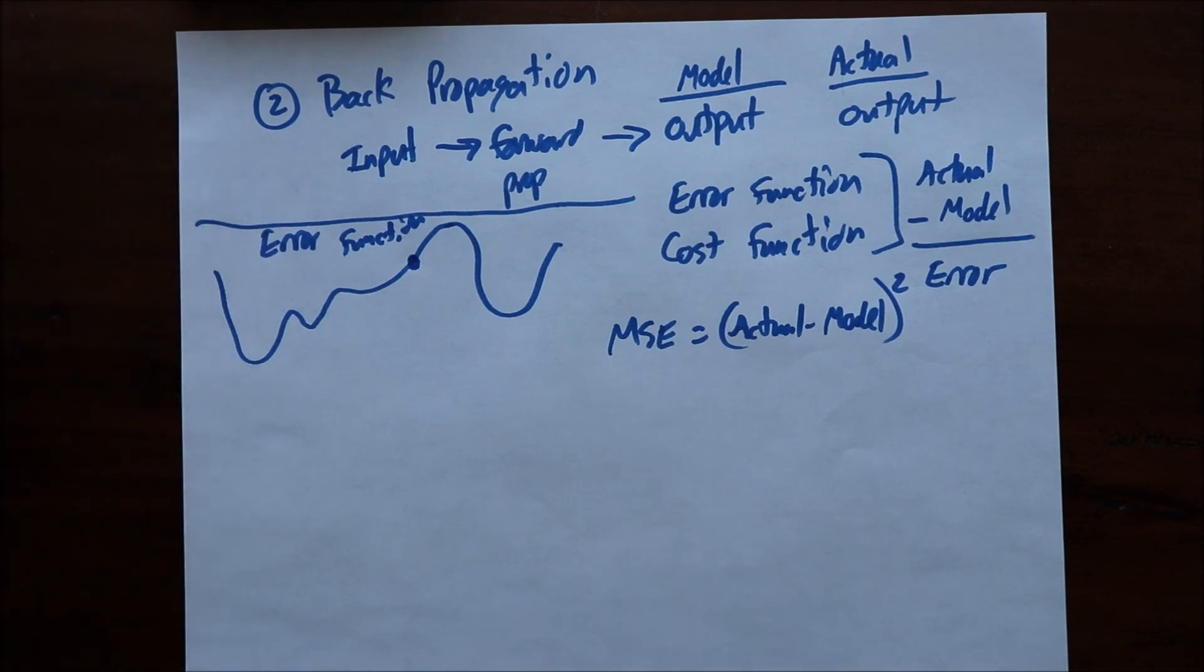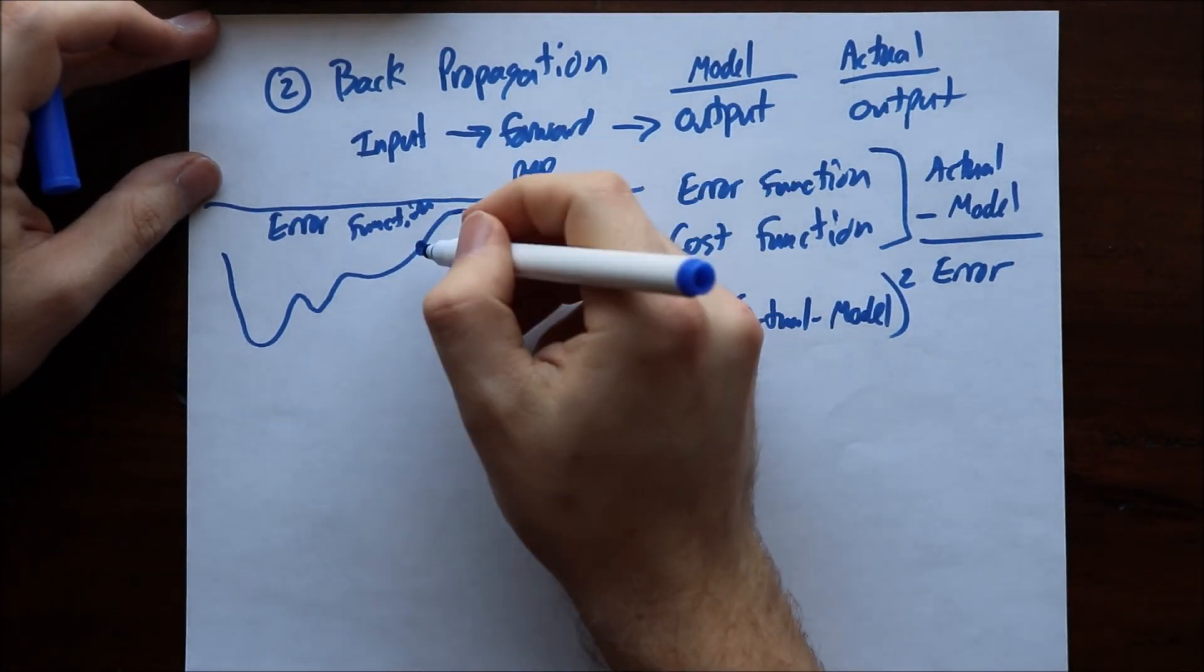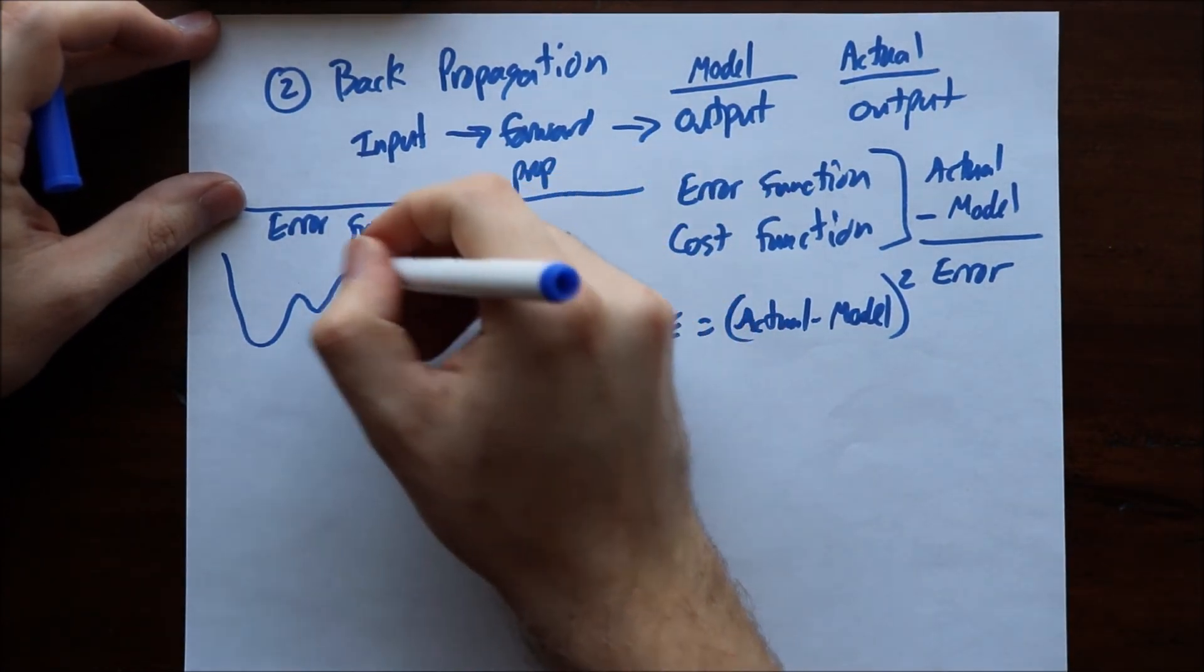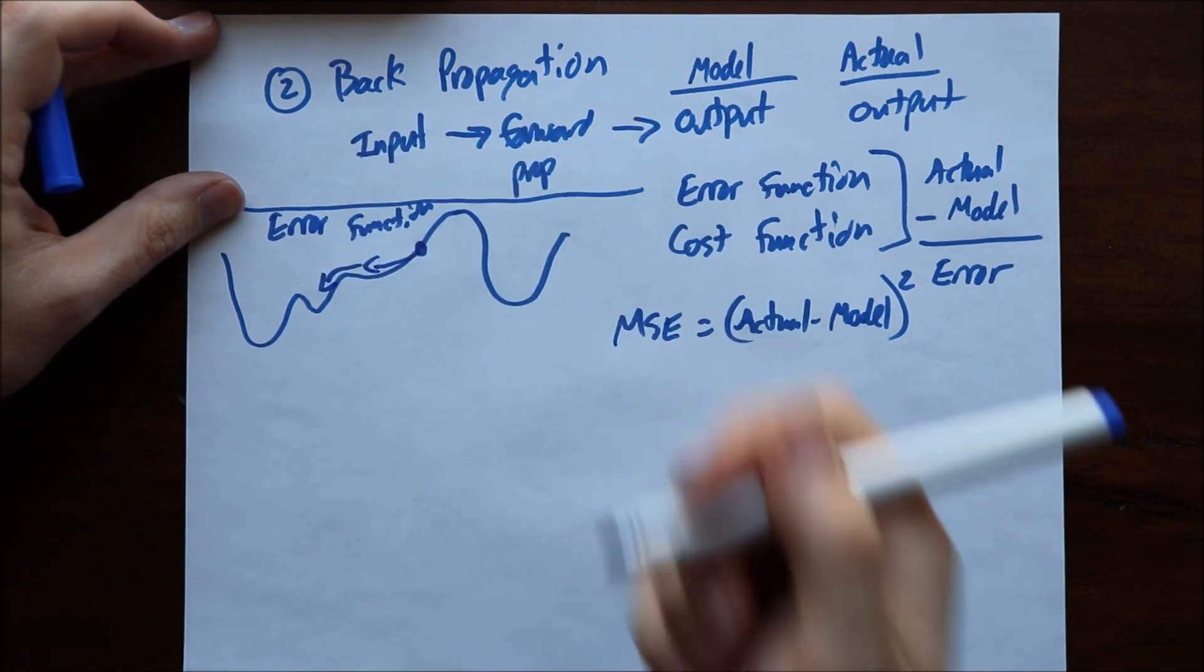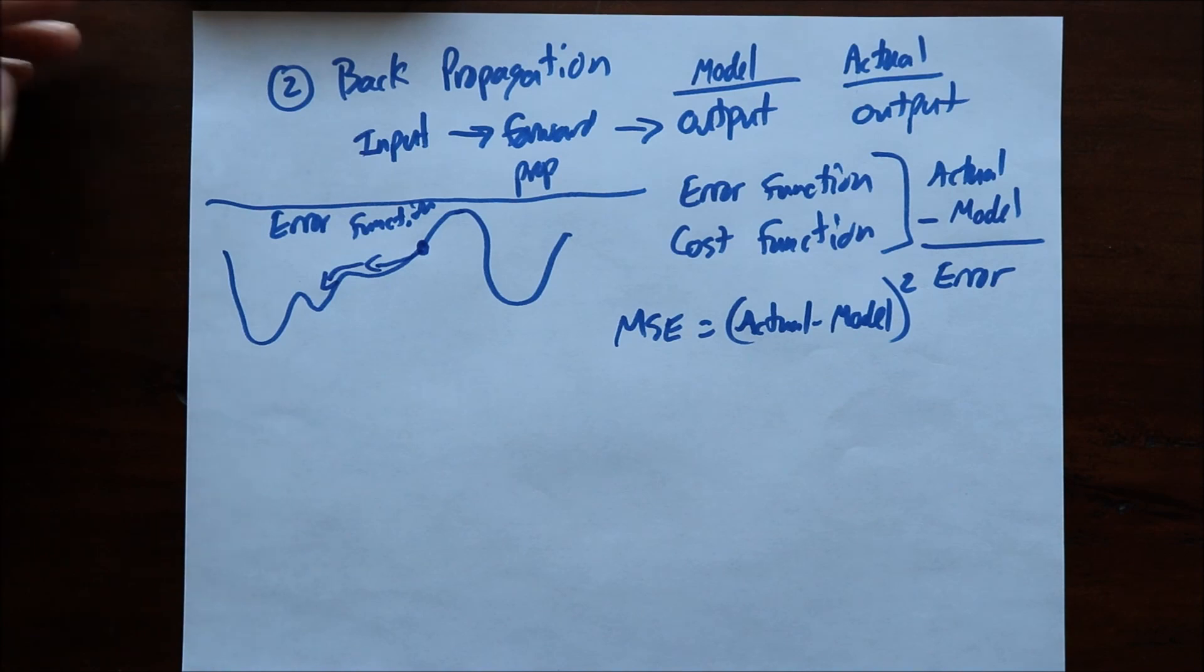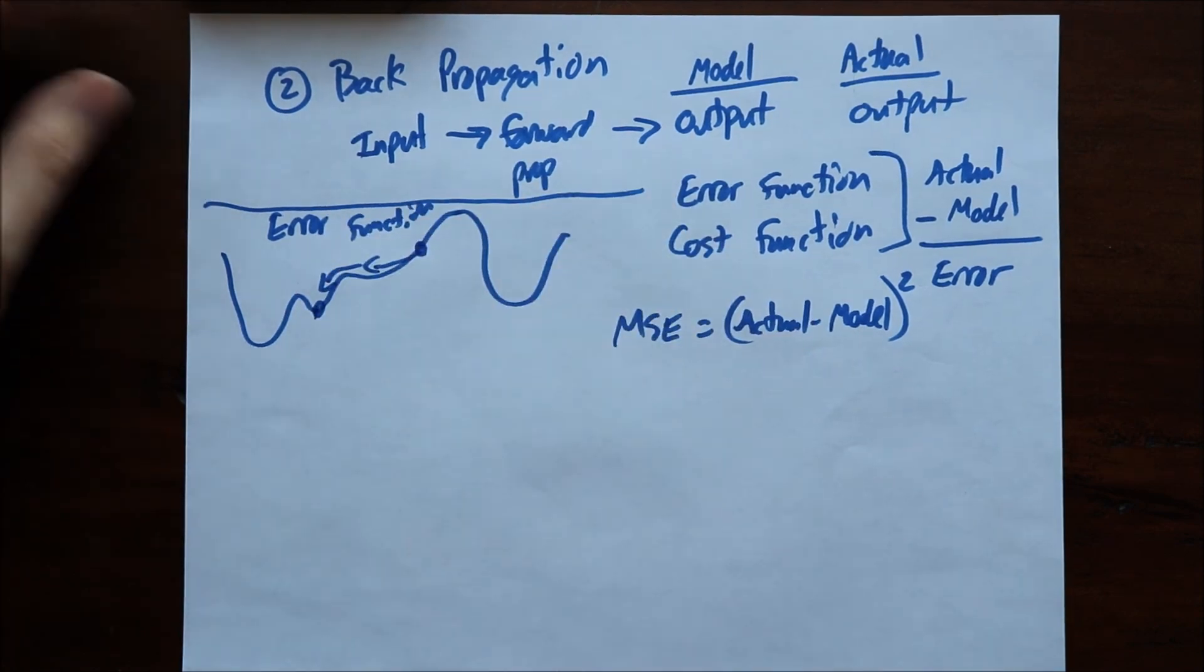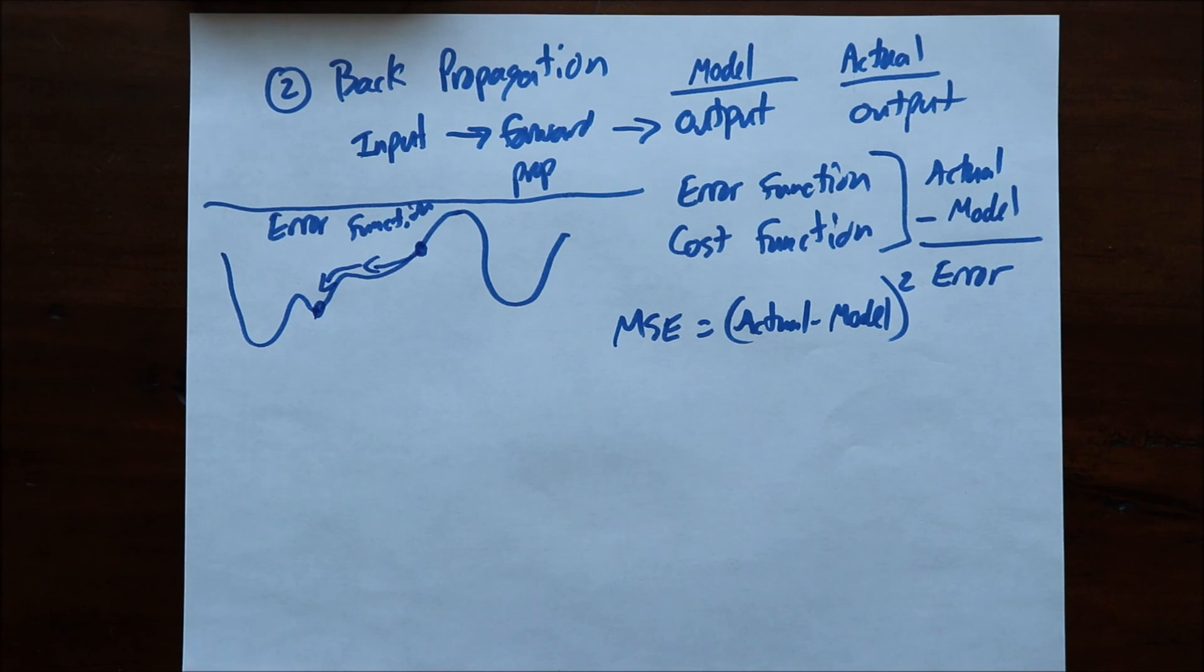When you use gradient descent which is a fancy word, if you haven't done a lot of linear algebra, it's a way of finding which direction you should move this dot. In this case we'd like to move it here and we'd like to find the minimum. One of the issues that a lot of people don't really bring up a lot is that finding this minimum is difficult. You might get stuck here and think this is the minimum because that's the local minimum.